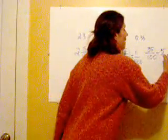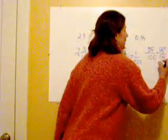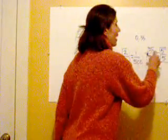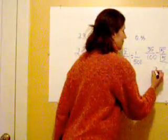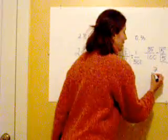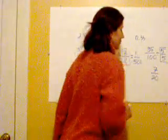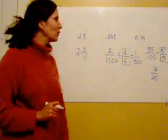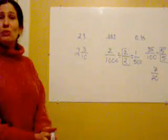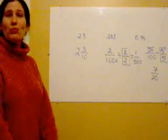So both of them are divisible by five, so thirty-five divided by five is seven, a hundred divided by five is twenty. So that's how you change from a decimal to fraction.